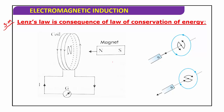We are moving the magnet towards the coil against the repulsive force, so extra work has to be done. That extra work involves mechanical energy — the motion of the object. That mechanical energy is converted into electrical energy. This demonstrates that Lenz's law is the consequence of the law of conservation of energy.